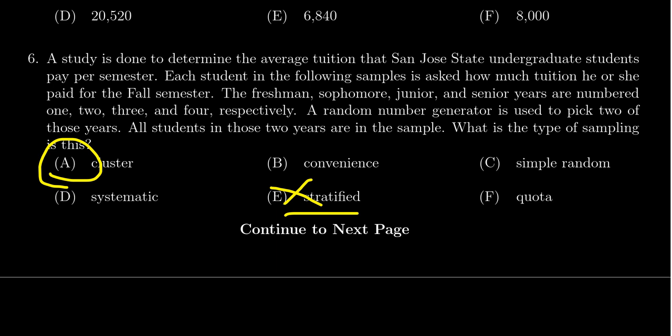It's not systematic because systematic would be like, we're going to list all of the students and then we're going to grab every 100th student or something like that. It's not systematic. It's definitely not random. I mean, it might be tempting to think that the groups were chosen randomly, but a simple random sampling is where you choose the members of the population randomly. So that's not the case either.